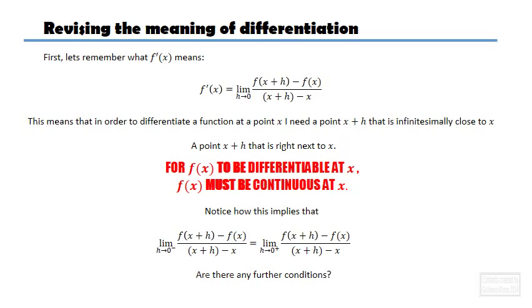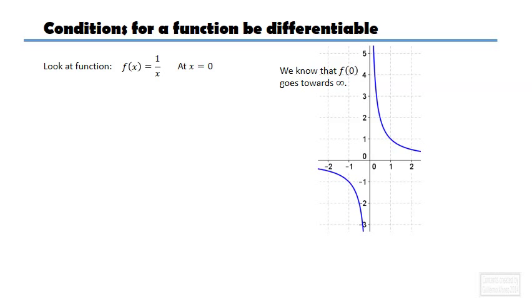Now, further conditions. Yes, there are more. Now, look at this function. Again, f(x) equals 1 over x. Now, clearly, we said that f(0) goes towards infinity, right?